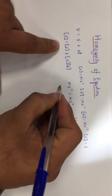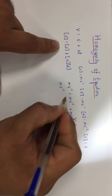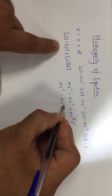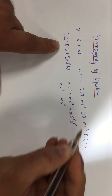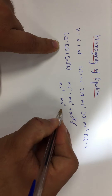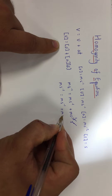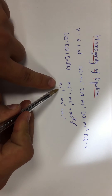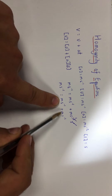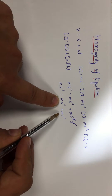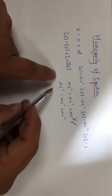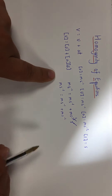This leaves us with m s⁻¹ equals m s⁻¹ plus m s⁻¹, which is just m s⁻¹. The units on the left-hand side equal those on the right-hand side, so this shows that the equation is homogeneous.